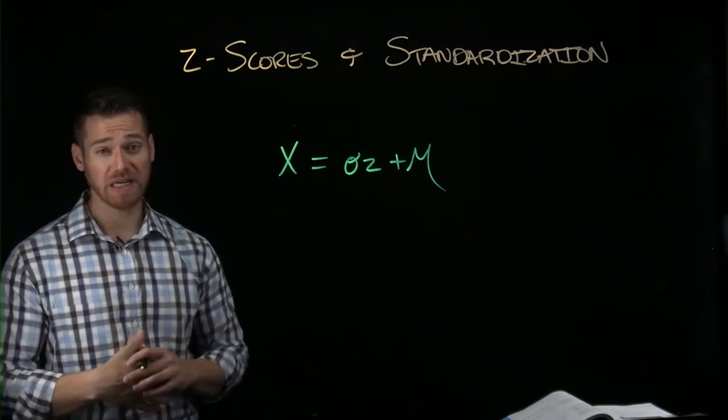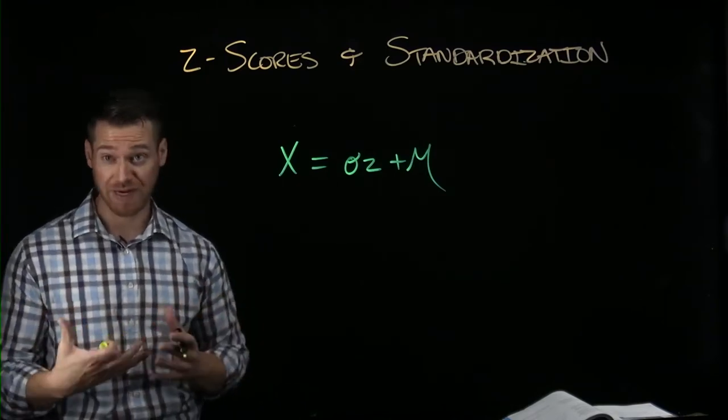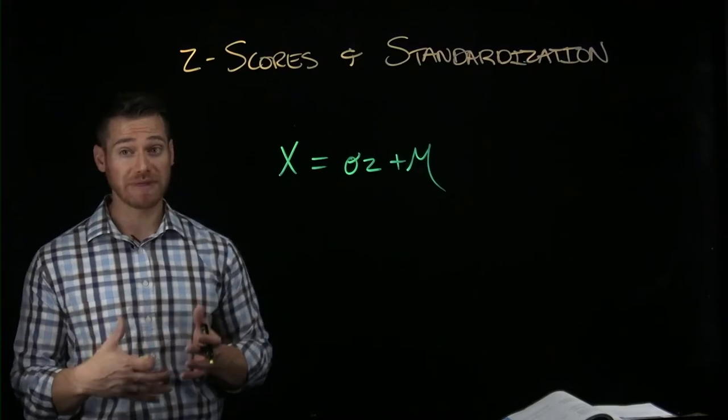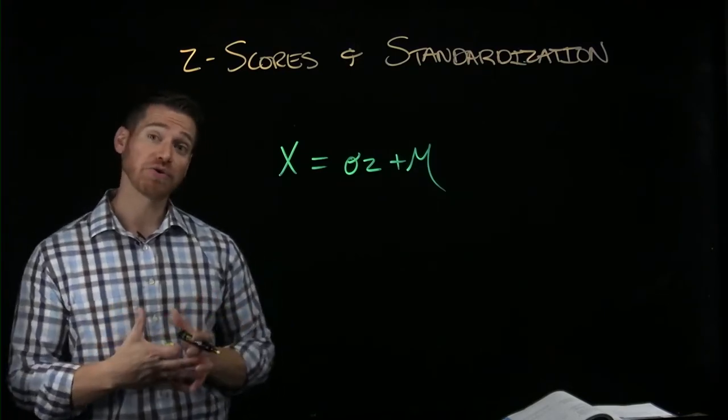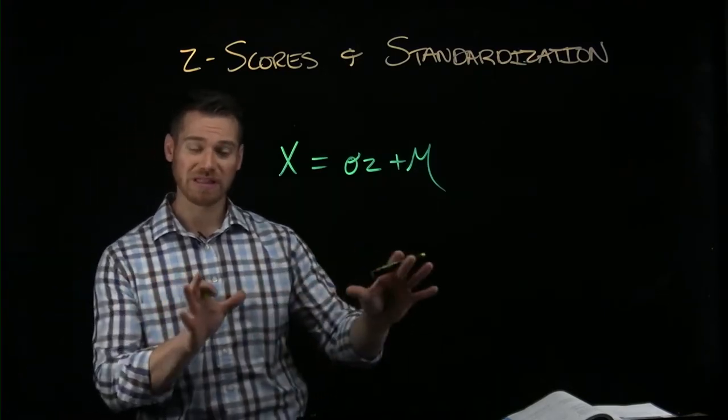Now remember, changing the mean and standard deviation doesn't change the distributional shape or its other characteristics. You're not changing its modality, its skewness. All you're doing here is changing where we're sliding it.